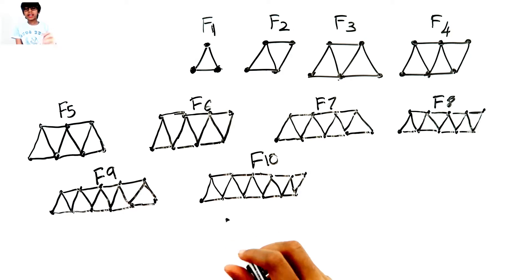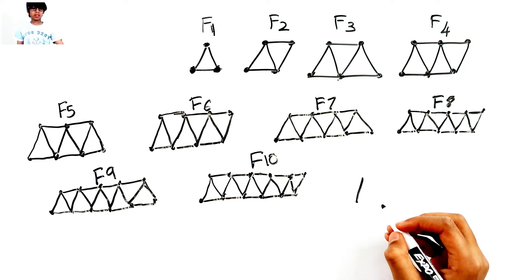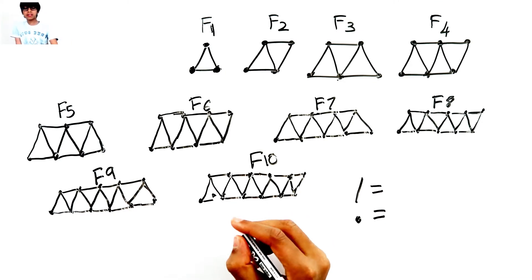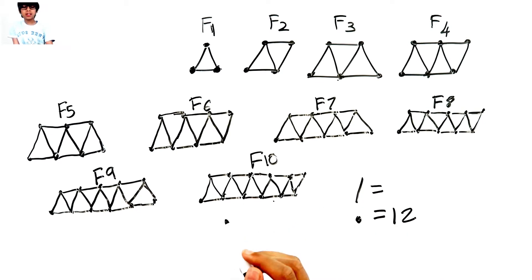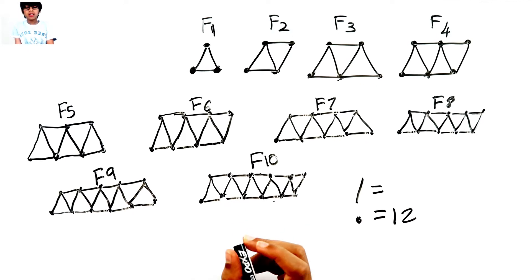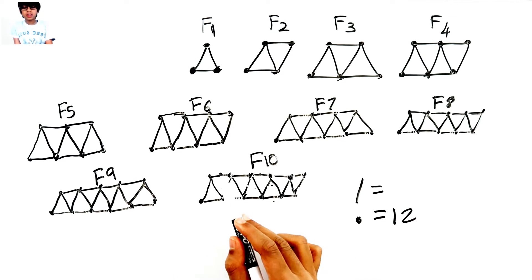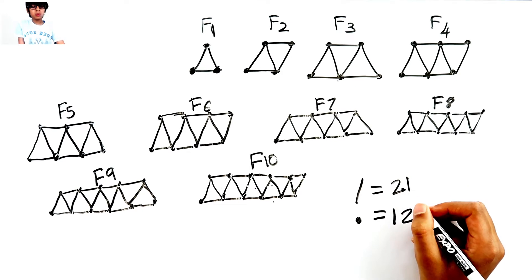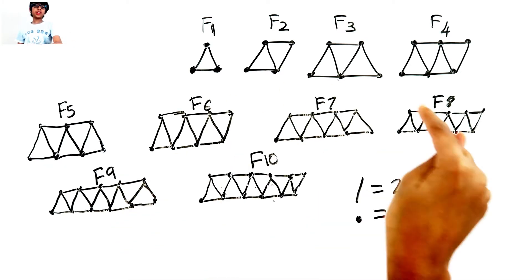Let's count how many dots figure ten has: one, two, three, four, five, six, seven, eight, nine, ten, eleven, twelve. Figure ten has 12 dots. Now let's count how many lines it has: one, two, three, four, five, six, seven, eight, nine, ten, eleven, twelve, thirteen, fourteen, fifteen, sixteen, seventeen, eighteen, nineteen, twenty, twenty-one. Figure ten has 21 lines.